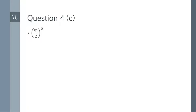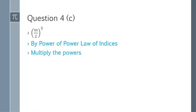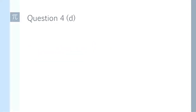Question 4c: (m/2)^5. Apply the power to both numerator and denominator: m^5 over 2^5. Since 2^5 = 32, the answer is m^5/32.